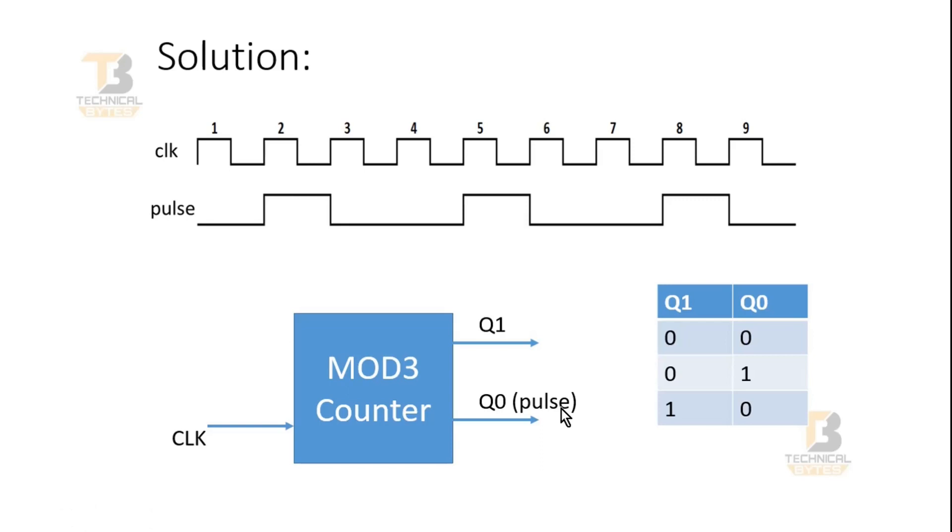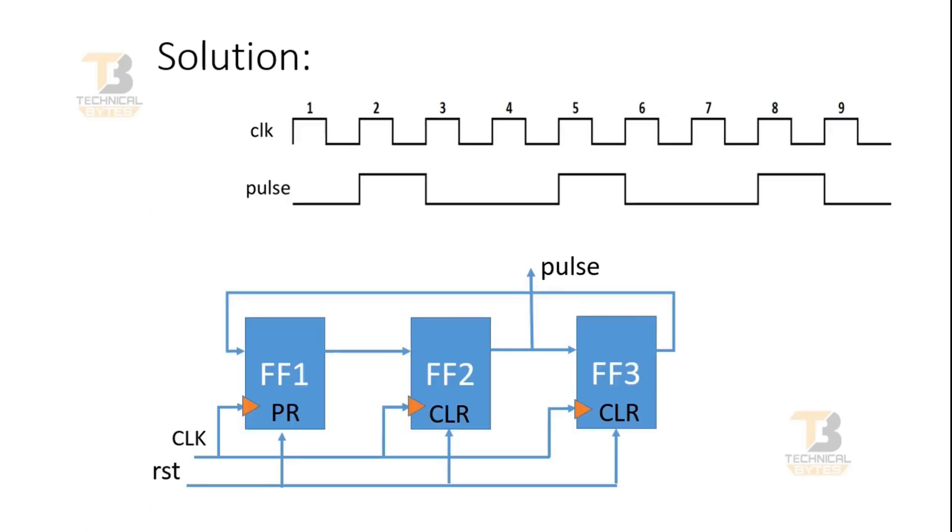Now let us move towards our second solution. A ring counter. A simple 3-bit ring counter which uses three flip flops. Output of the first flip flop is going at the input of the second flip flop. And output of the second flip flop is going at the input of the third flip flop. And output of the third flip flop is going at the input of the first flip flop.